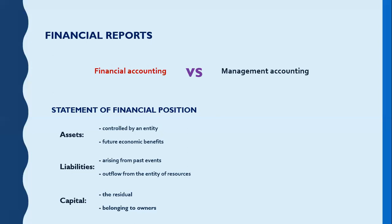The next thing we need to learn is the statement of profit or loss. The statement of profit or loss is by far the easiest one, as it includes only revenues and expenses. Revenues are all the economic benefits flowing into the company in one period, while expenses are the reverse of revenue — they are the economic benefits flowing out in one period that we are preparing our financial reports for.